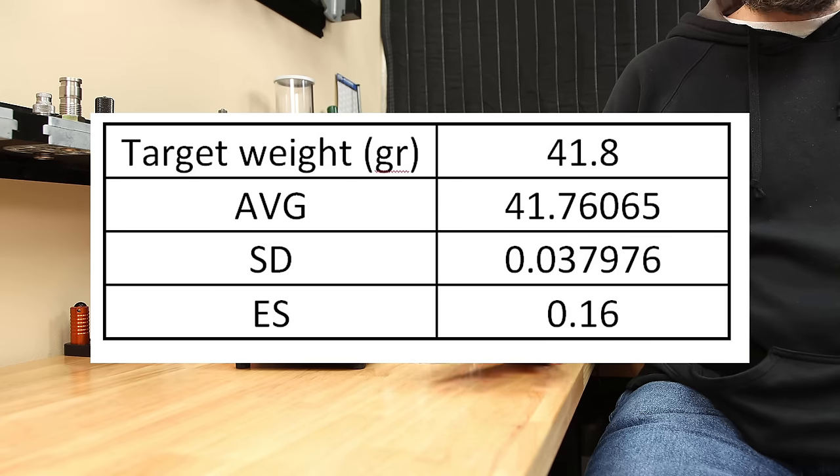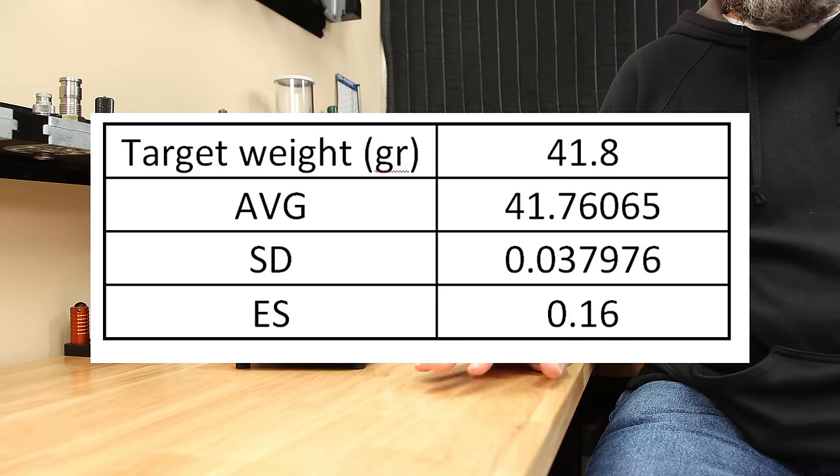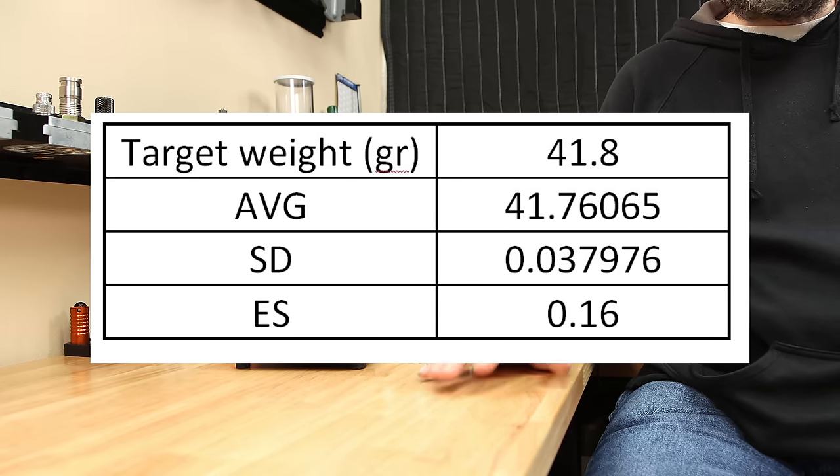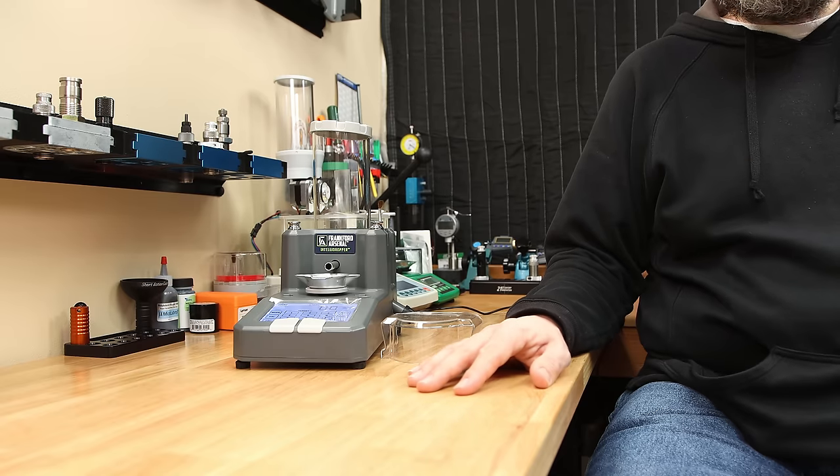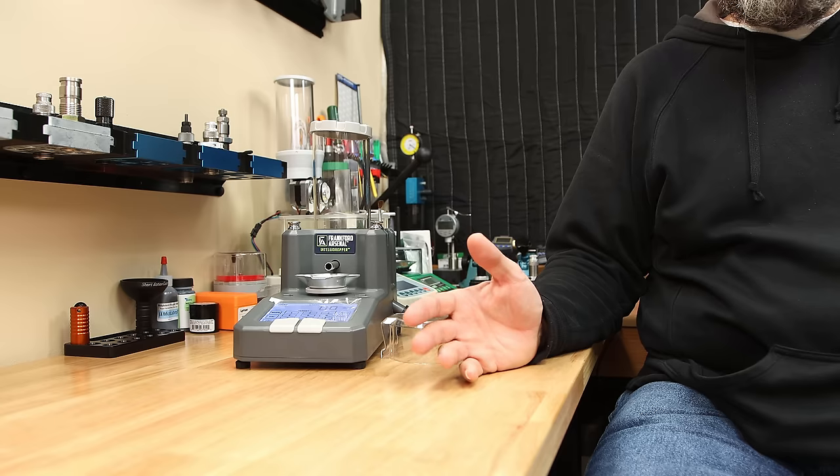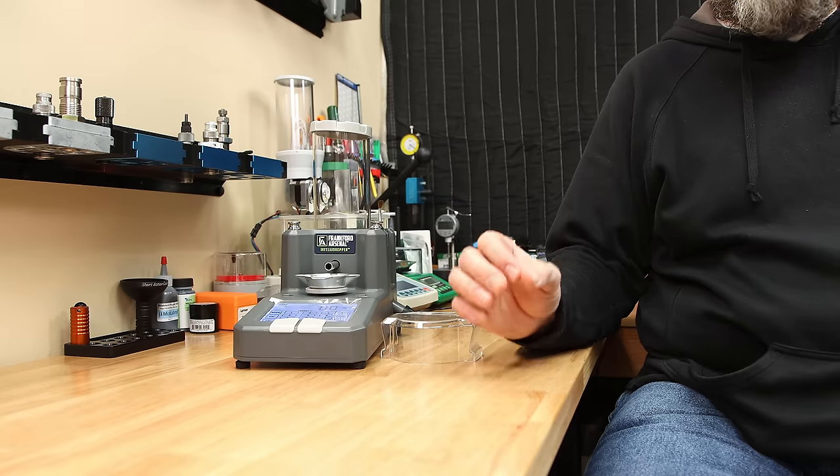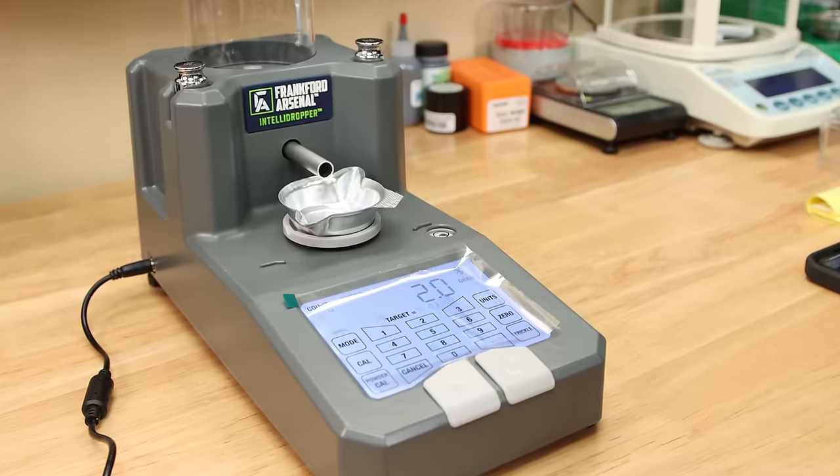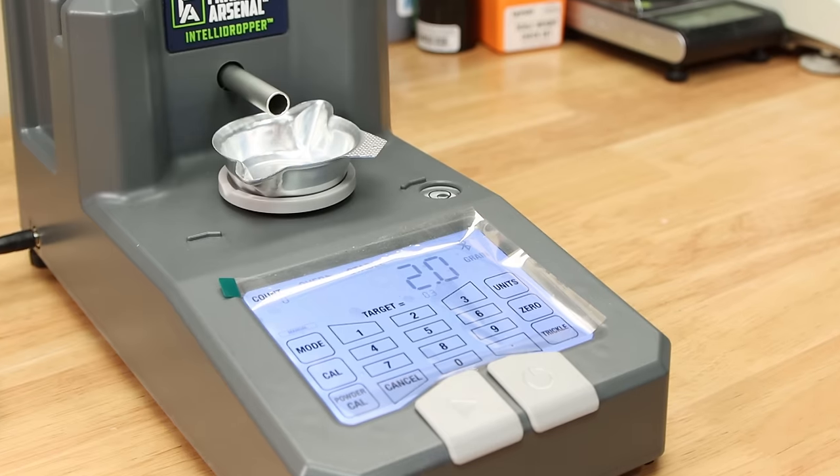The standard deviation was 0.037 grains with an extreme spread of 0.16 grains across the board. I did experience two overcharges during those 62, but those would have been brought back into spec by basically removing one granule of powder. Those are not averaged into that dataset because simply the IntelliDropper said overcharge.